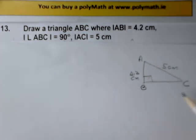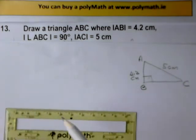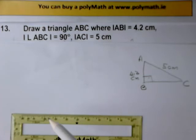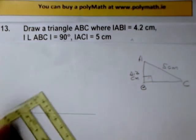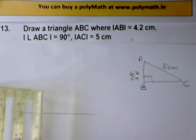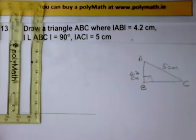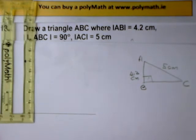Now I'll follow this diagram when drawing the accurate one. The first thing I'll do is draw a line here and then make a right angle using the internal angles of the protractor.